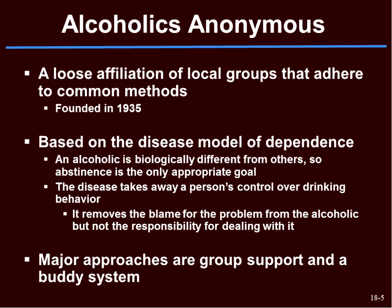The disease model holds that an alcoholic is biologically different from others, so abstinence is the only appropriate goal. The disease takes away a person's control over drinking behavior and removes the blame for the problem from the alcoholic — but it does not remove the responsibility for dealing with it. It's not your fault that this happens, but it is now your responsibility to never drink again.